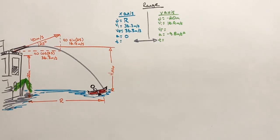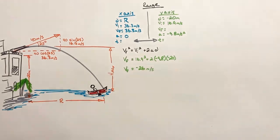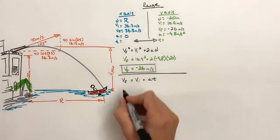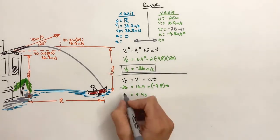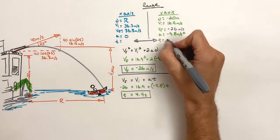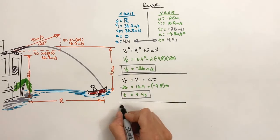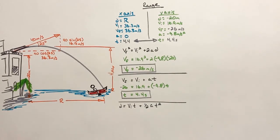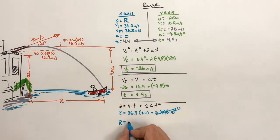The initial velocity in the y-axis is 16.9 meters per second upward, so we show it as positive. The acceleration in the y-axis is negative 9.8 meters per second squared. Using the kinematic equations and our values in the y-axis, we find it takes 4.4 seconds for the shell to travel from the top of the fortress to the boat at the waterline. Knowing the shell is traveling horizontally for 4.4 seconds, we find the horizontal range of the shell is 160 meters.